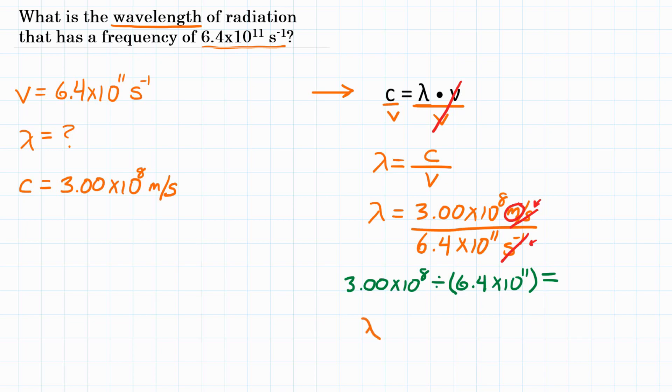And then if you hit equals in your calculator, you should have 4.6875 times 10 to the negative 4. Or we can round that to two significant figures and get 4.7 times 10 to the negative 4. And our units are again meters. So final answer, what is the wavelength of radiation that has a frequency of 6.4 times 10 to the 11th hertz? That would be 4.7 times 10 to the negative 4 meters.